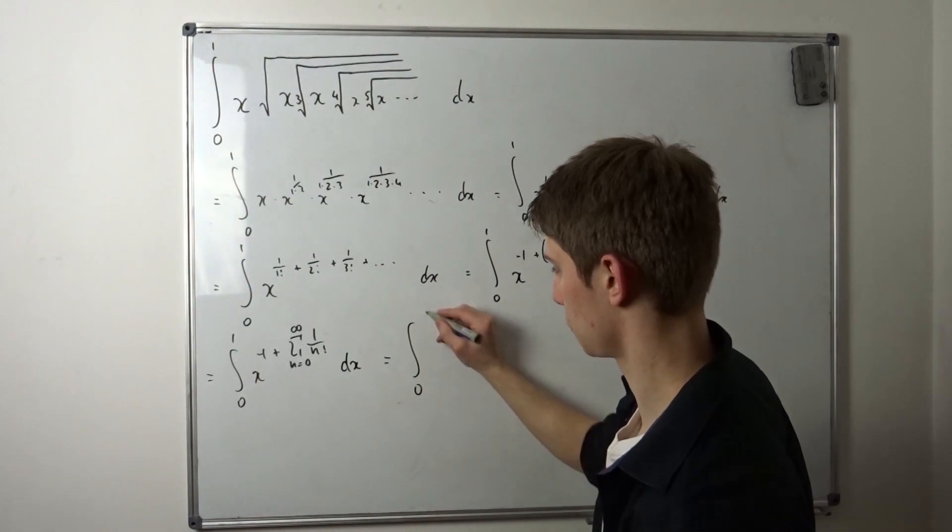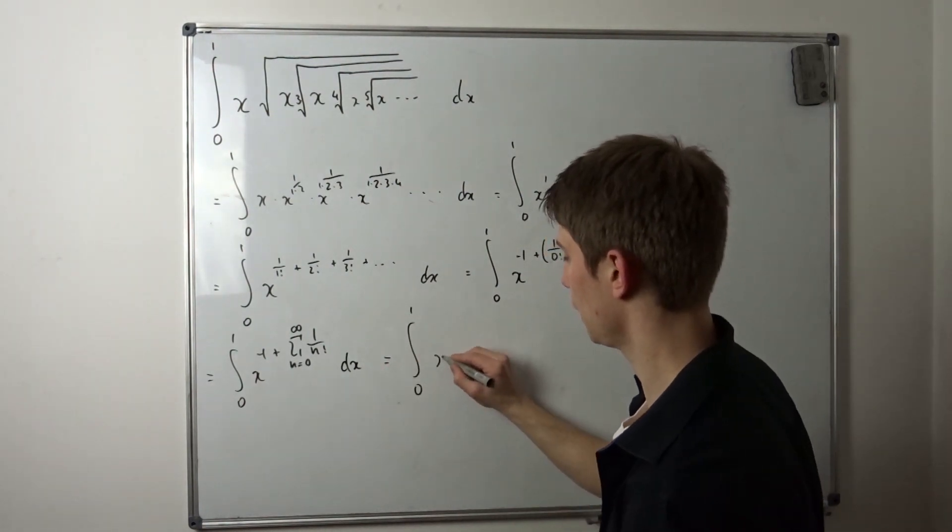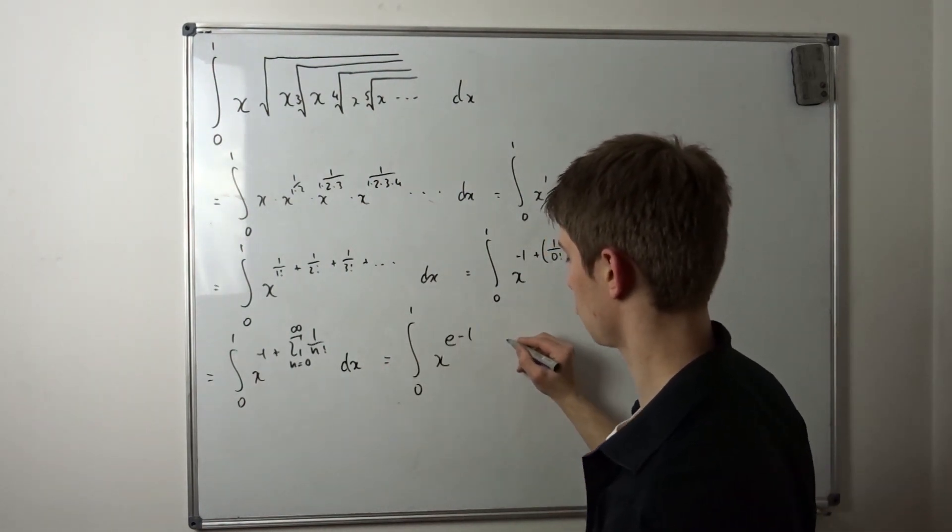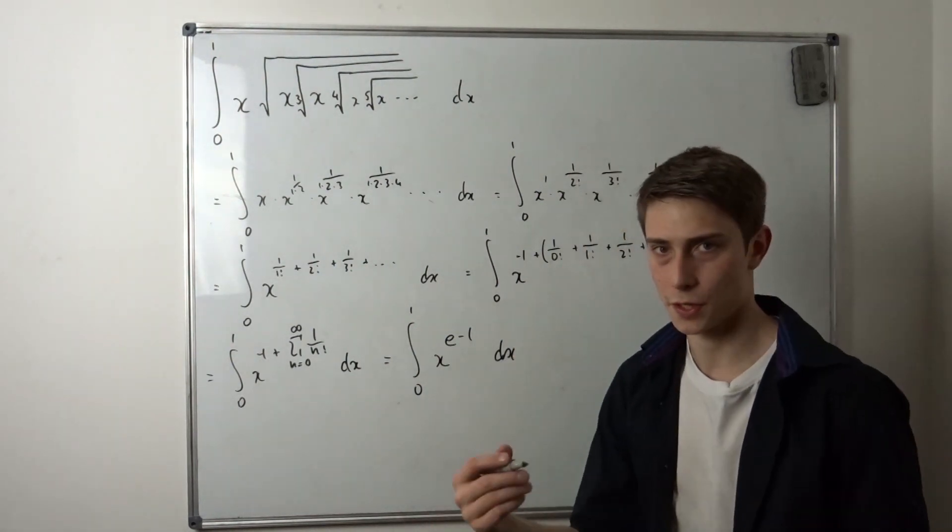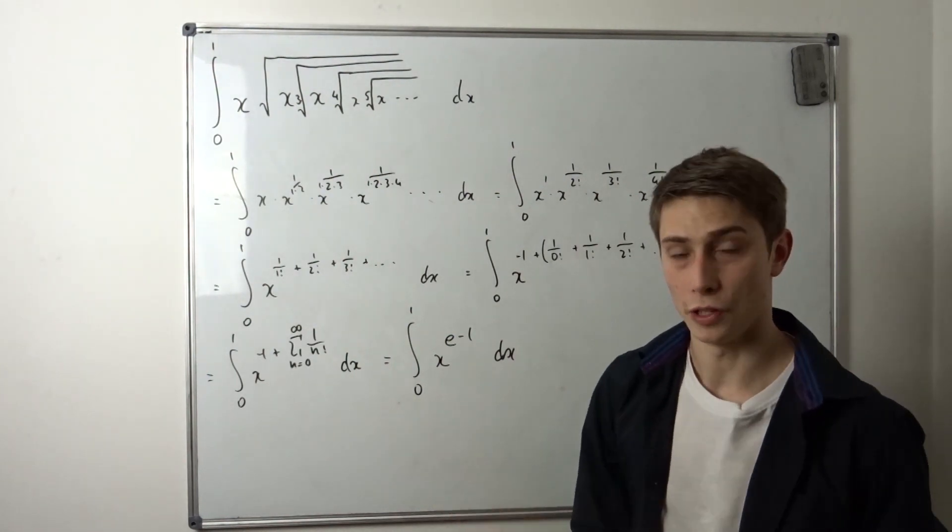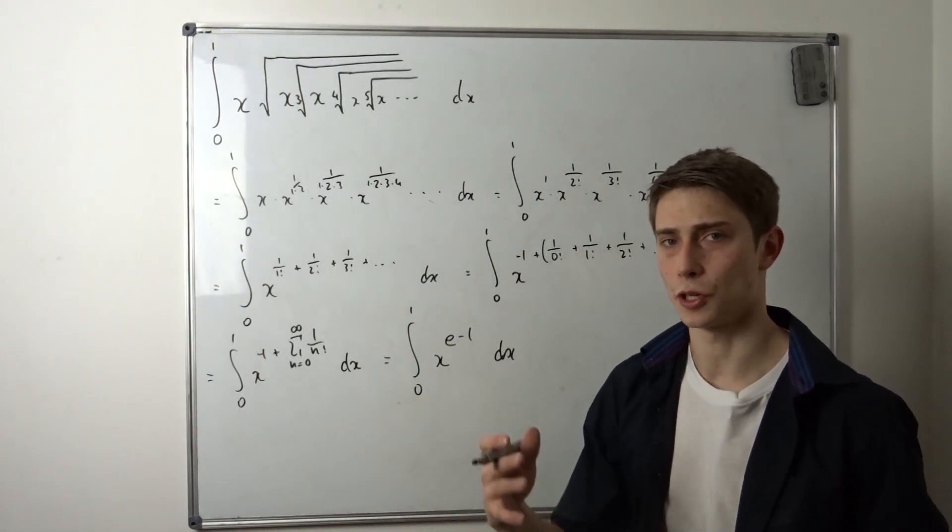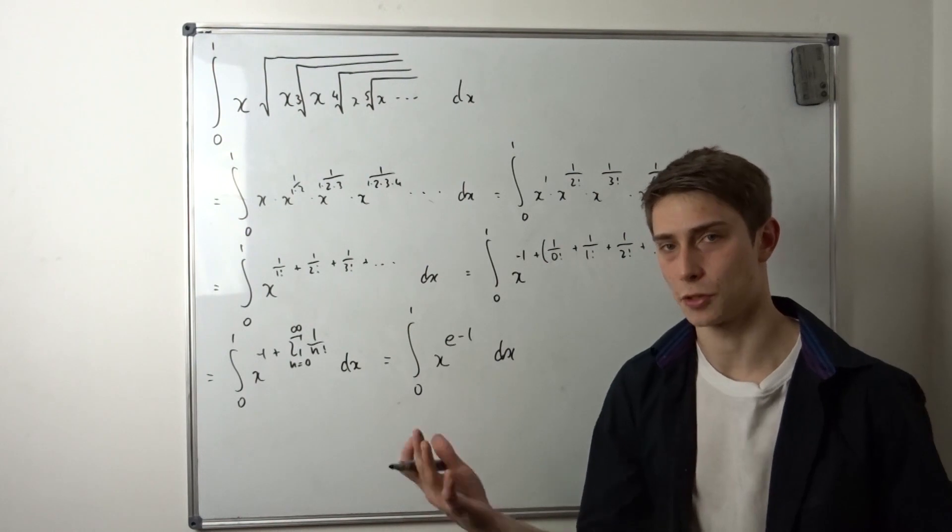So let's rewrite this. So finally, this is just the integral from zero to one of x to the e minus one power dx, and that's pretty easy to integrate. So when we integrate that, we get one over e times x to the e power from zero to one.